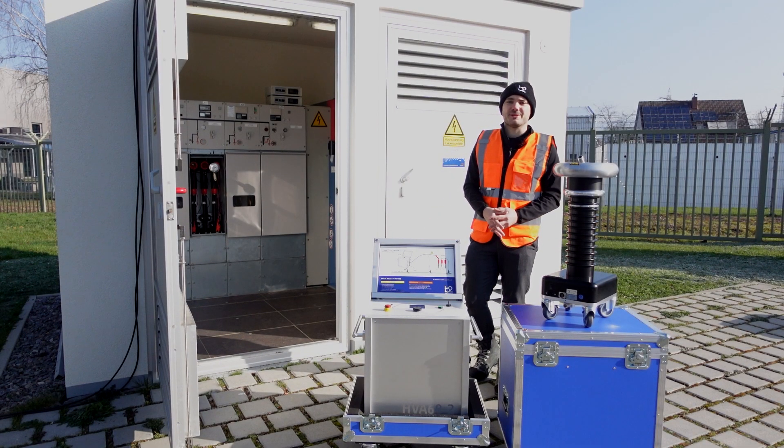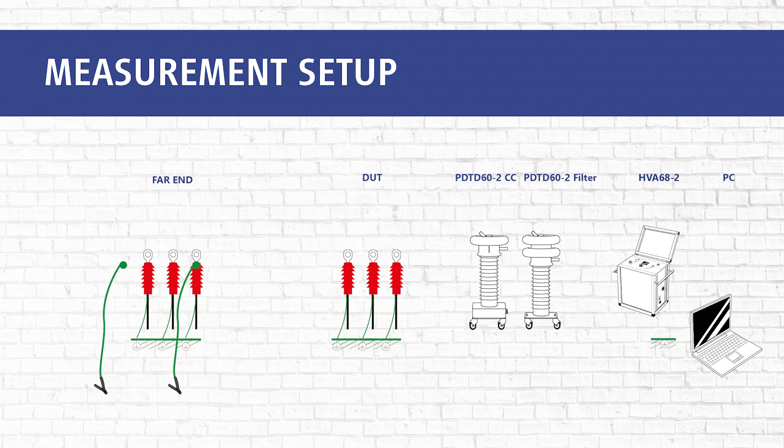Now we start with our measurement. Please ground the far end of the not tested phases and apply the same rules for the phases to be tested on the far end as the near end, like corona shields and the distance to other potential. The far end connections are not included in this video and will be included in a later video.